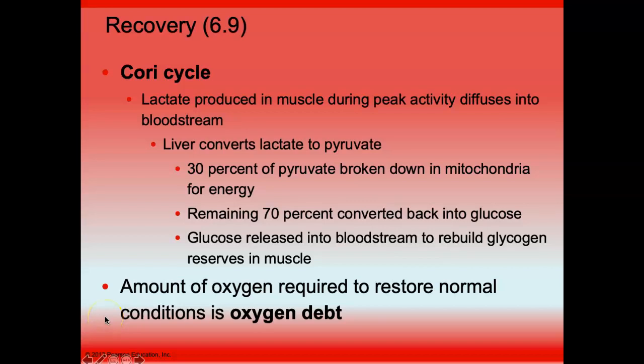After intense muscle activity, our muscles have to return to normal. The lactate that diffuses into the bloodstream goes to the liver, and the liver will convert it back to pyruvate and then finally back to glucose. That glucose can go into the bloodstream and rebuild the glycogen reserves in the muscle. This conversion of lactate back to glucose is called the Cori cycle.